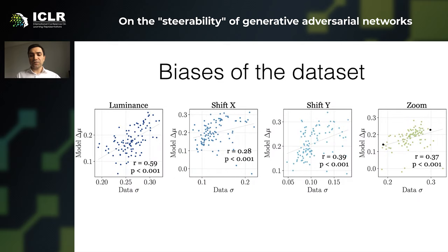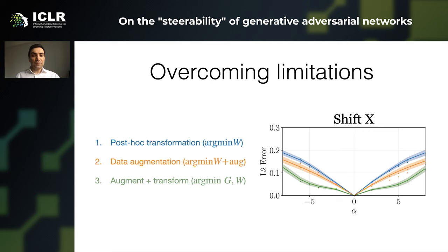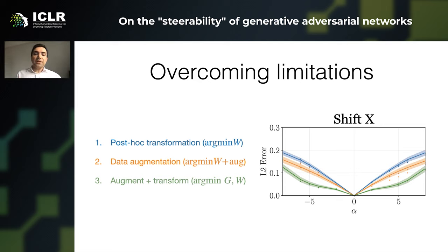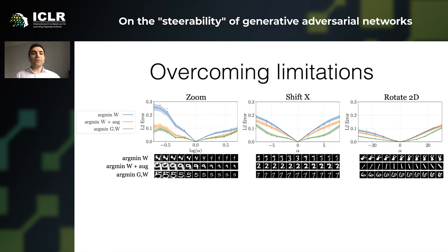The question is how we can overcome the limitations. So far we have shown the blue curve, which represents the error between the transform and the target. To bring it down, one way is to extend the data variability through data augmentation, and the result is the orange curve. But you can go further: you can do augmentation while simultaneously jointly training the generator and the walk, and you can see the result in the green curve. We can show this result for different transformations.